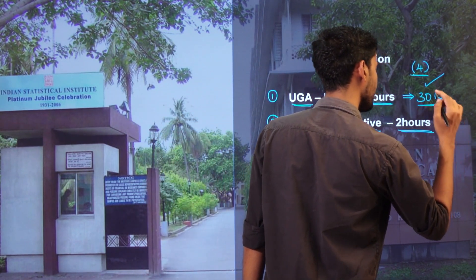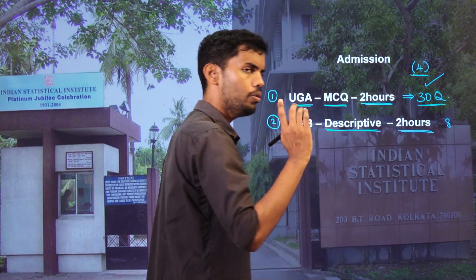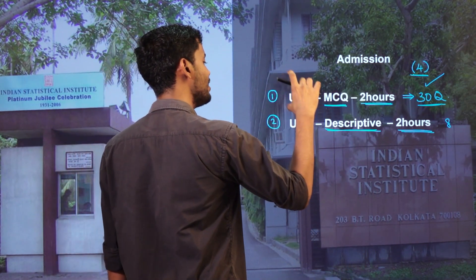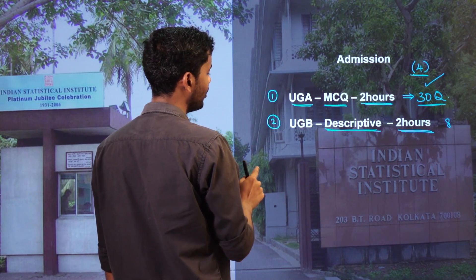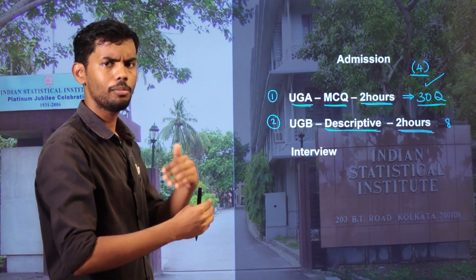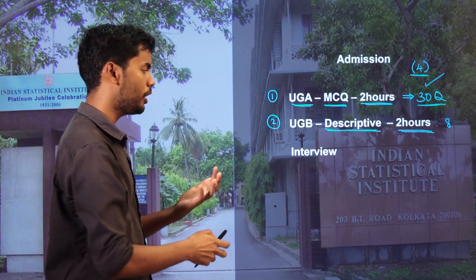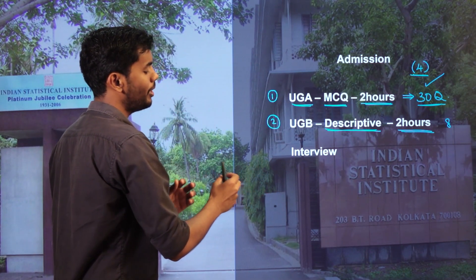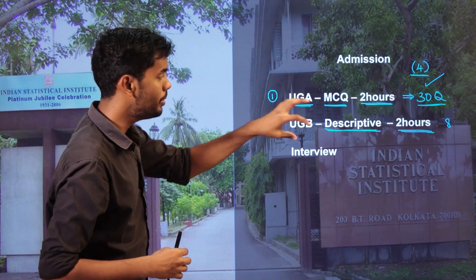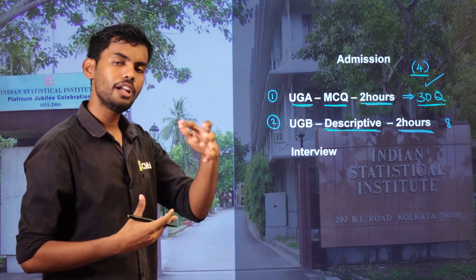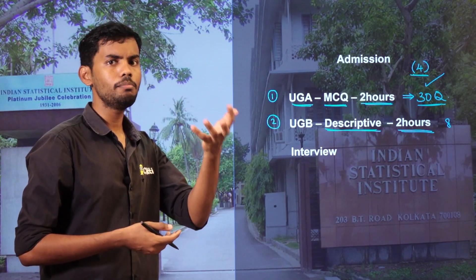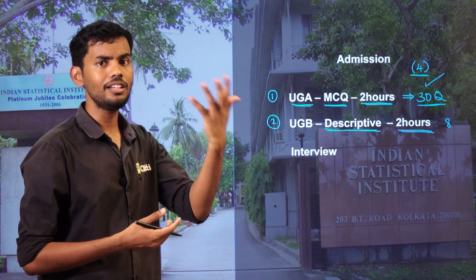There are 8 questions and the duration is 2 hours. After both exams, the top 50 or top 100 candidates will be called for an interview. The UGB is descriptive type, covering basic mathematics and statistics related topics.